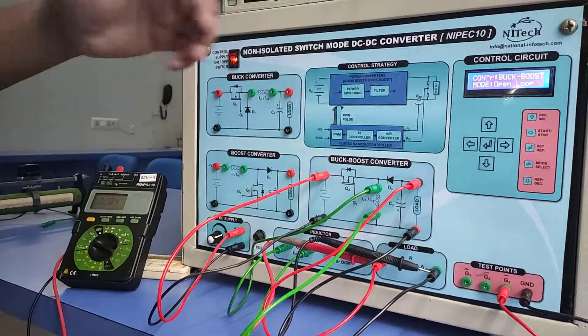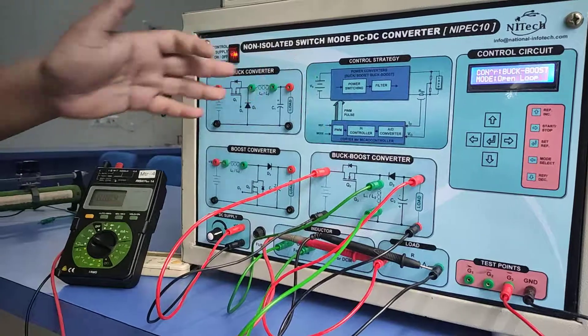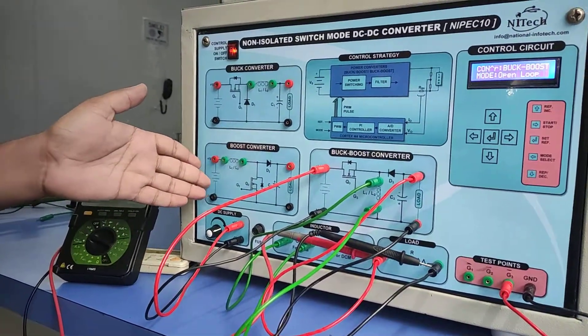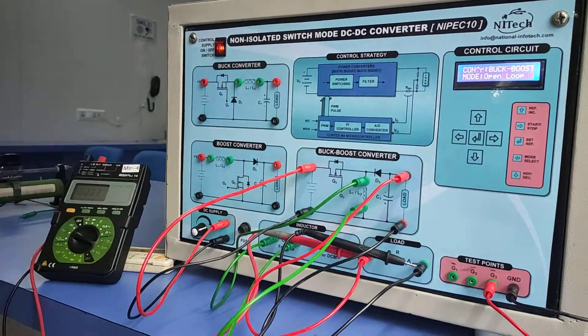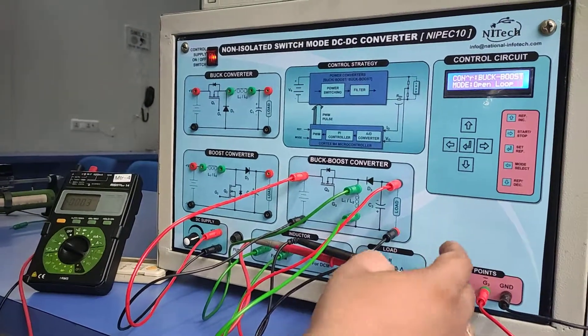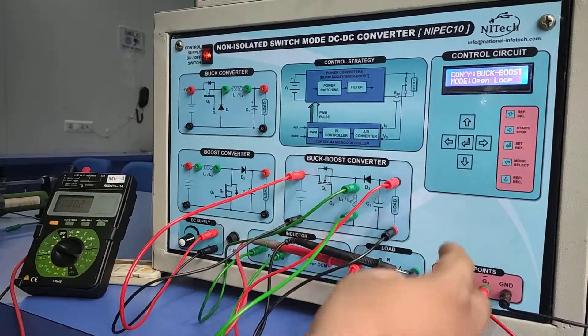For the operation of the buck-boost converter in open loop mode, we just need to shift our connections. The connections are the same for open loop mode, with the load fixed internally at the output side.